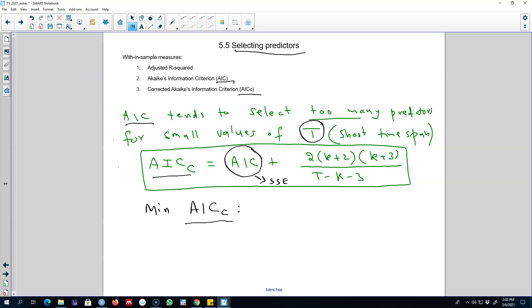All right, so this was the third way of selecting predictors. In the next video I'm going to talk about our fourth measure that we can use to select the predictors.